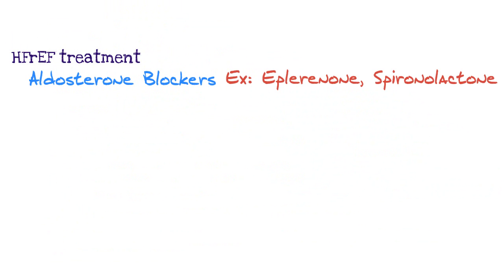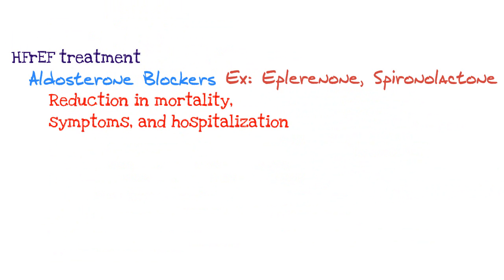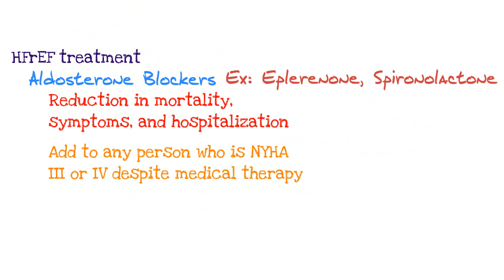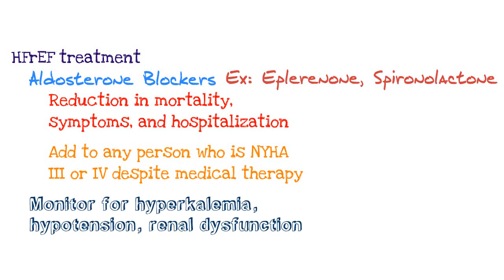The next category is aldosterone blockers, which include eplerenone and spironolactone. The benefits of aldosterone blockers are that they reduce mortality, symptoms, and hospitalizations for patients with reduced ejection fraction heart failure. You should add this to any person who has NYHA class 3 or 4 despite medical therapy. Monitor for hyperkalemia, hypertension, and renal dysfunction. Make sure spironolactone is added even if the patient may or may not be on diuretic therapy.